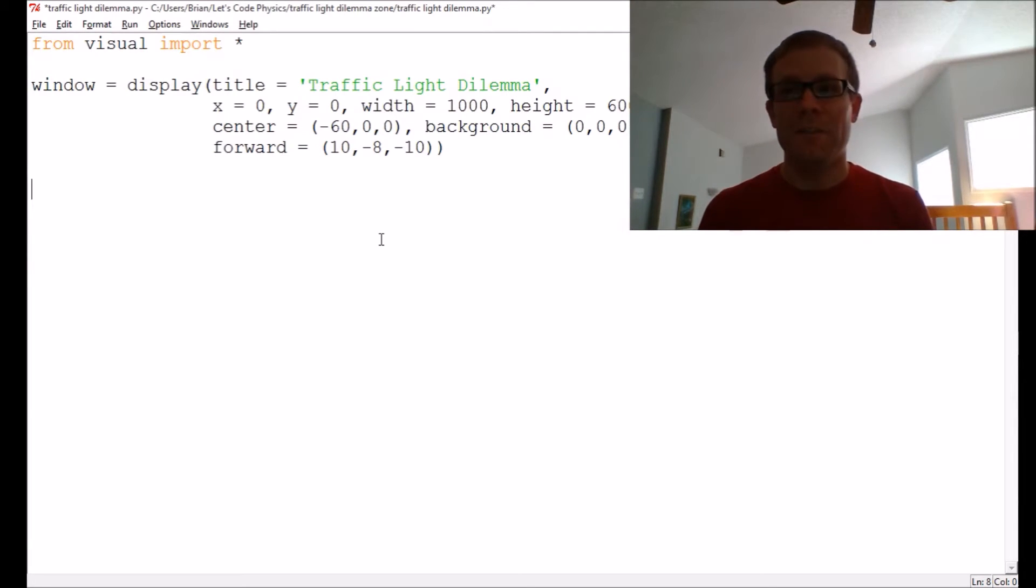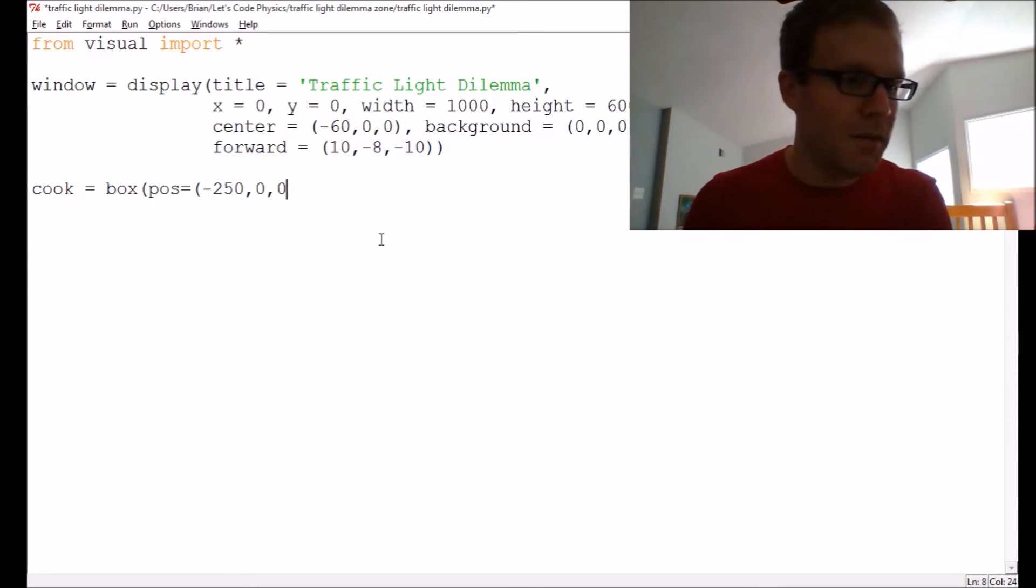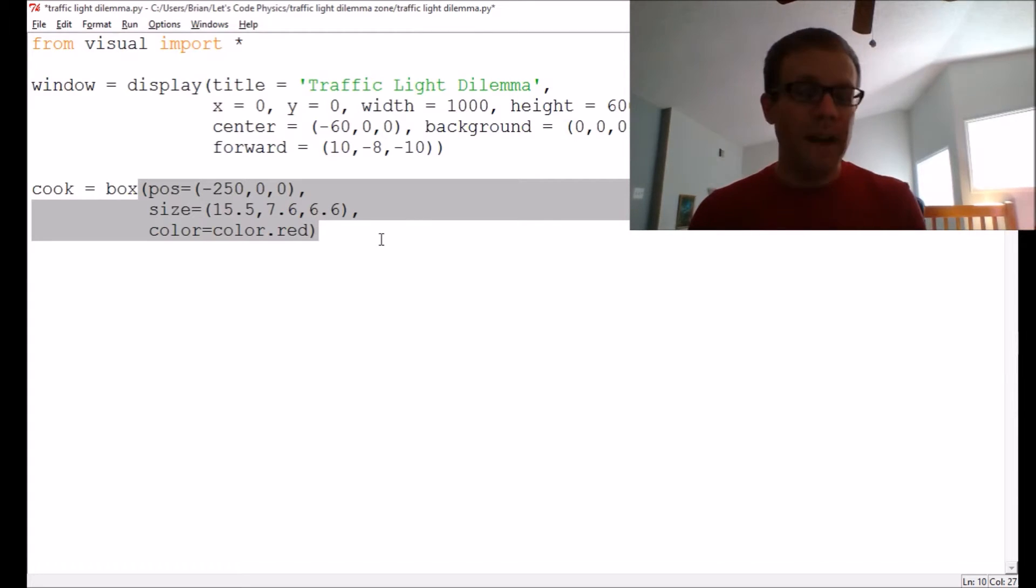Our first one is going to be Cook, William Cook, one of our first subscribers. He's going to get a red car, and we're going to have him start about 250 feet away from the intersection. So we'll put the intersection edge at x equals 0, so it's easy to work with. We're going to make the car the average size of about 15.5 and 7.6 and 6.6, and we're going to give him a red car. Cook, I'm assuming, is a peaceful, law-abiding citizen, so Cook is going to be the car that brakes. So he's going to be the car that brakes. No matter what happens, as soon as that light turns yellow, he's going to brake.